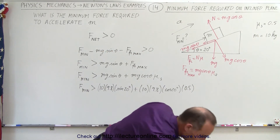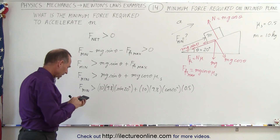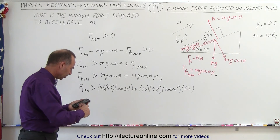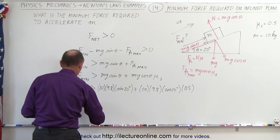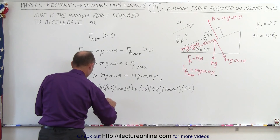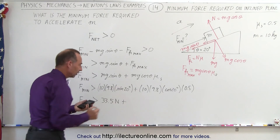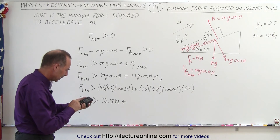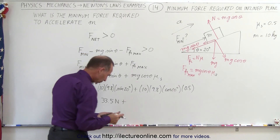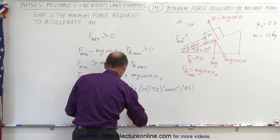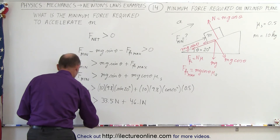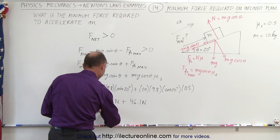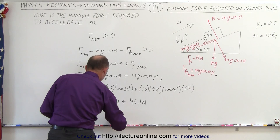Let's see what that equals. We have 98 times sine of 20, which equals 33.5 newtons, so the minimum force required has to be greater than 33.5 newtons, plus 98 times cosine of 20 times 0.5, which gives another 46.1 newtons. Therefore the minimum force required is greater than 79.6 newtons.